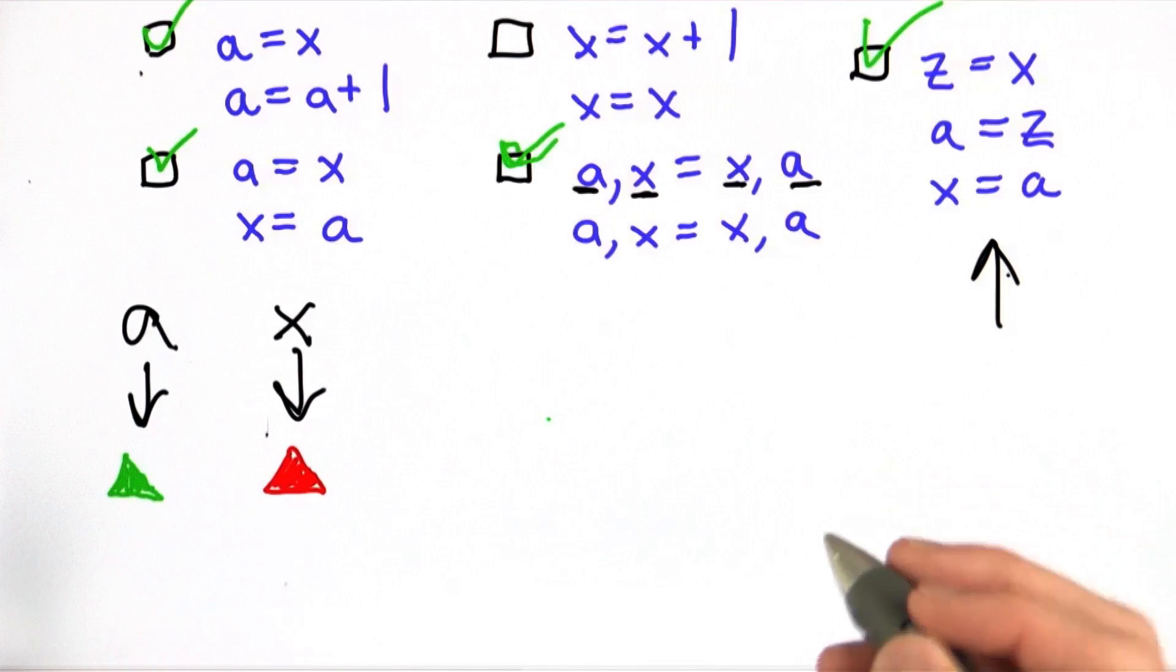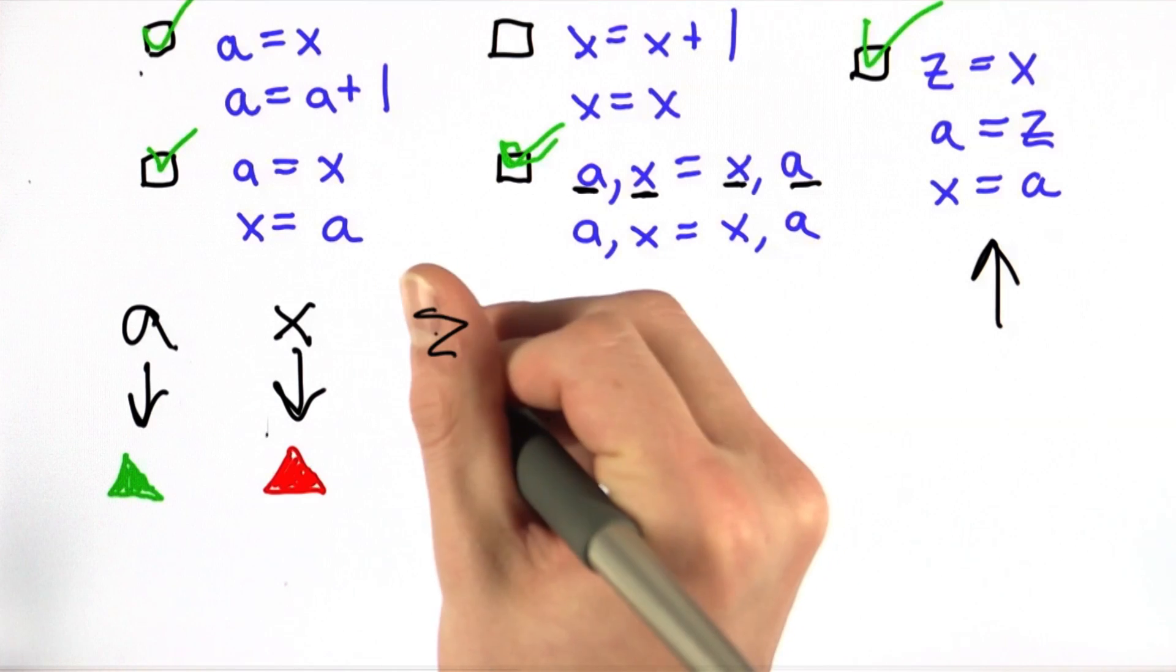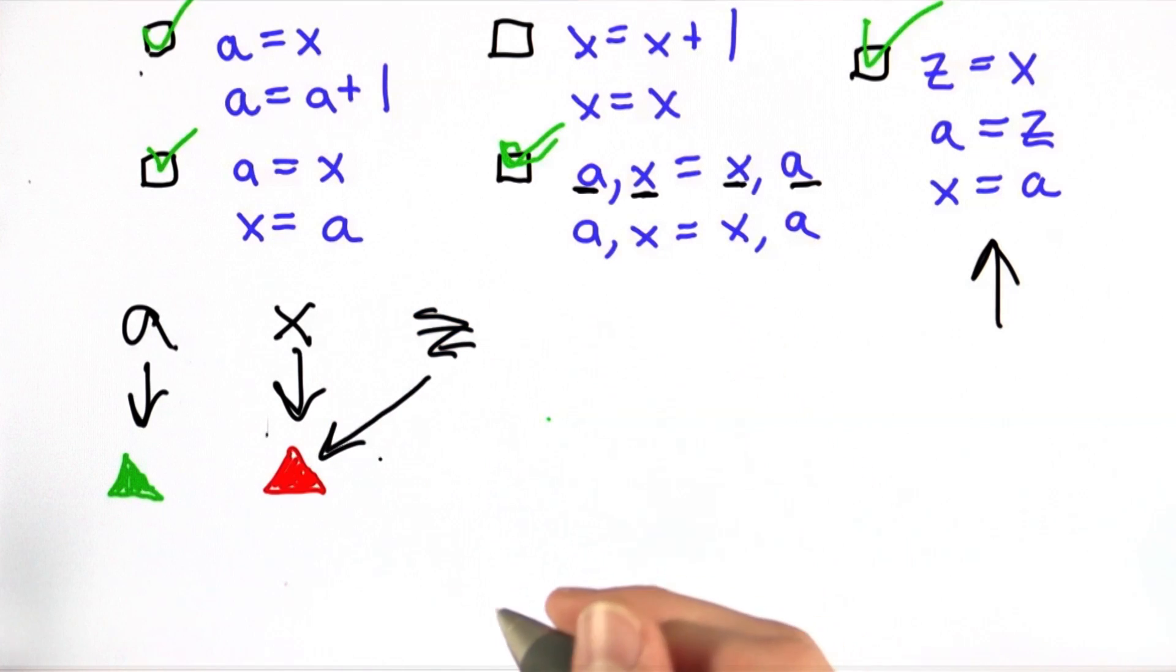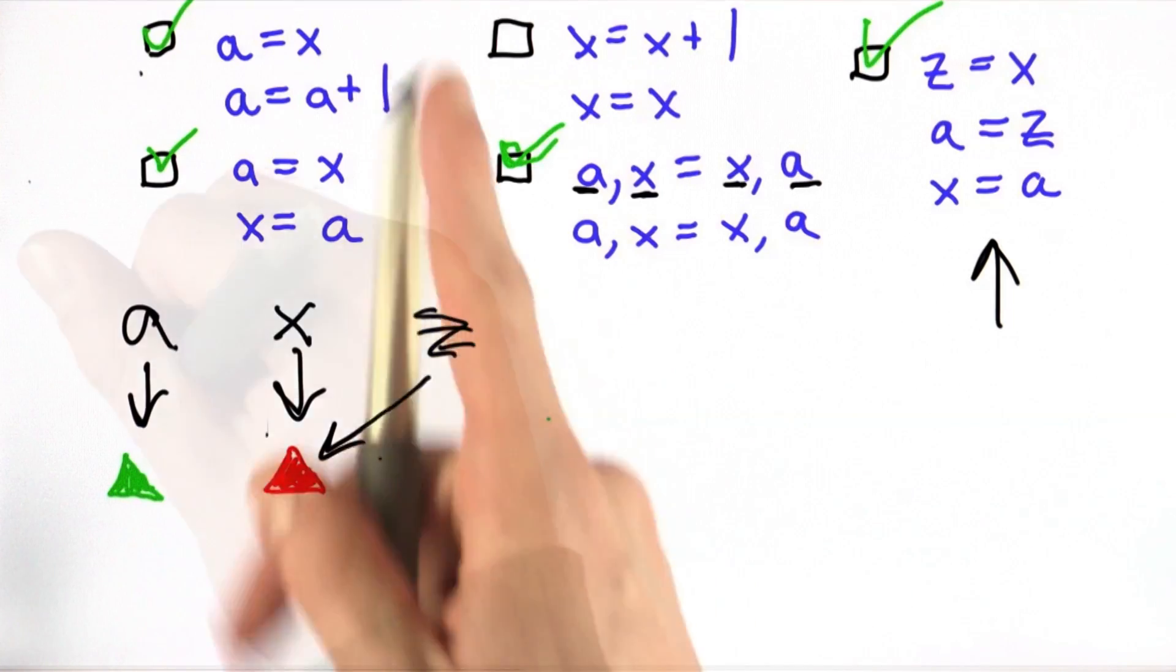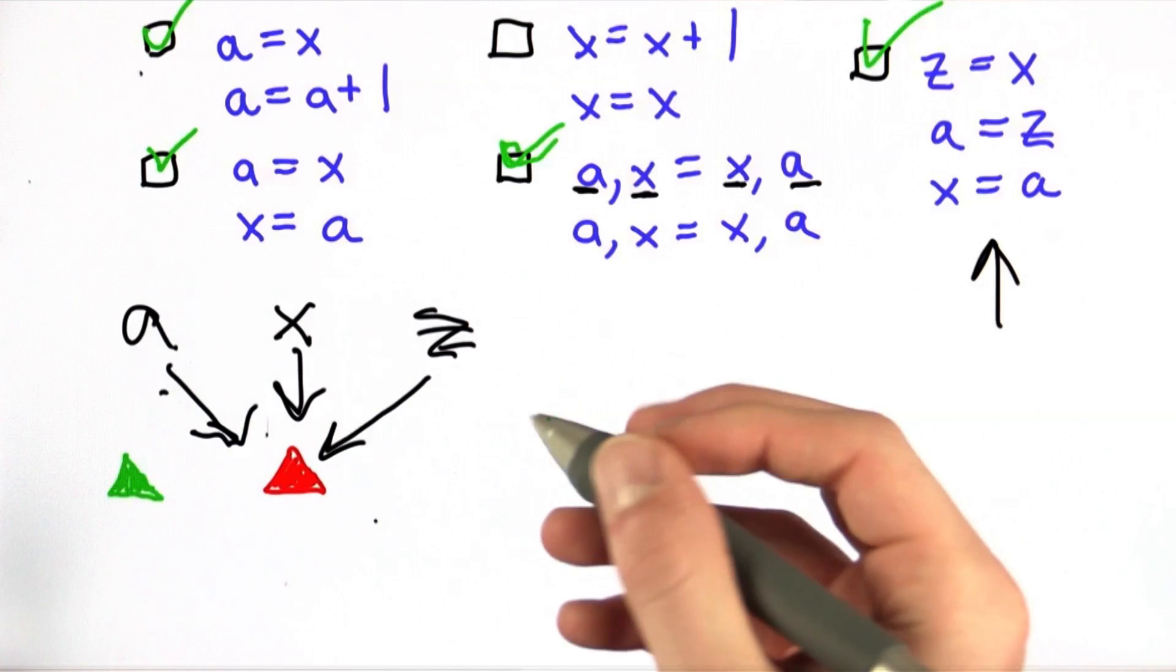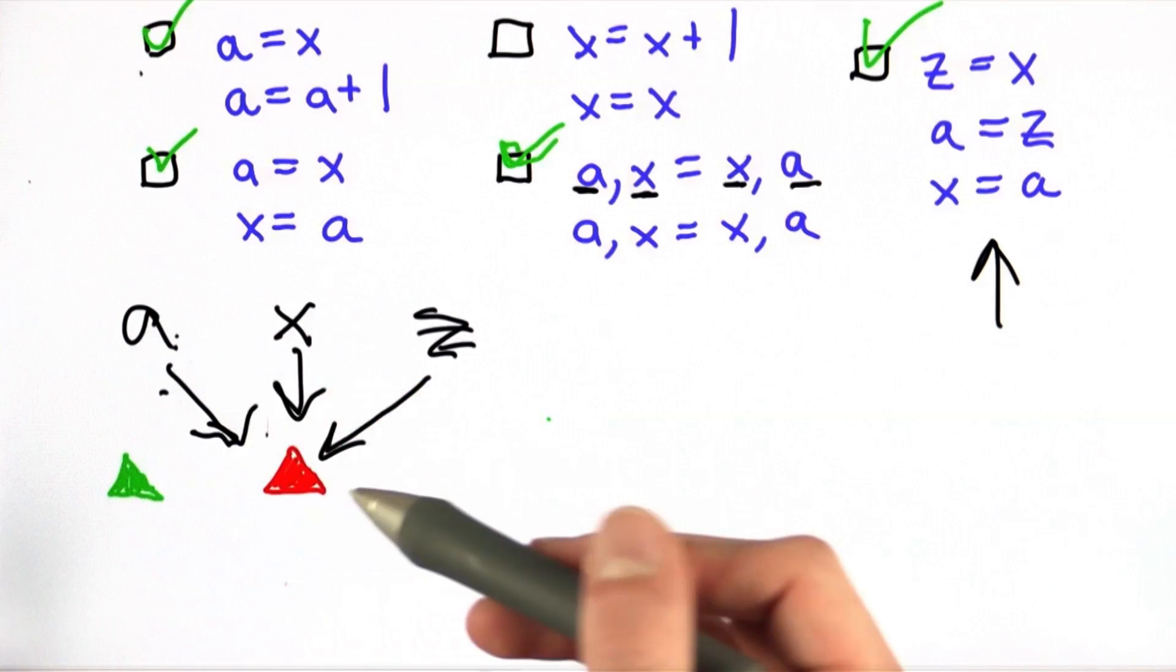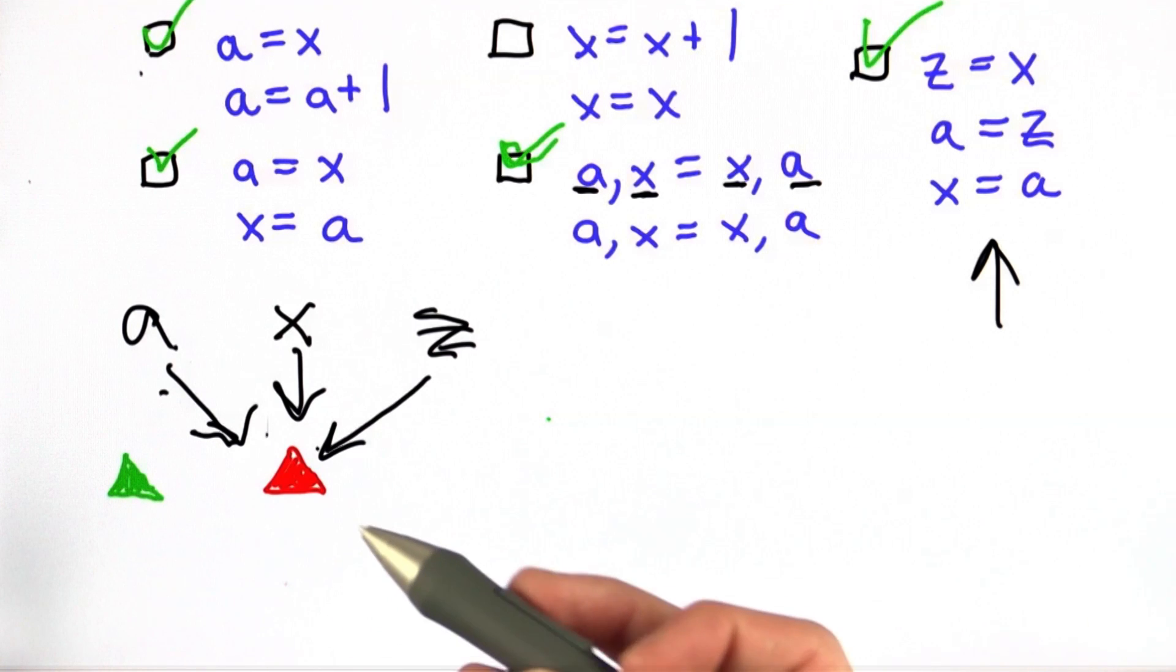In the last choice, we have a third variable, Z. We initialize Z to the value of X, which is the red triangle. We then assign A to what Z refers to, which is also the red triangle. And lastly, we set X to the value of A. A refers to the red triangle, so X also refers to the red triangle. The end result is the value of X hasn't changed.